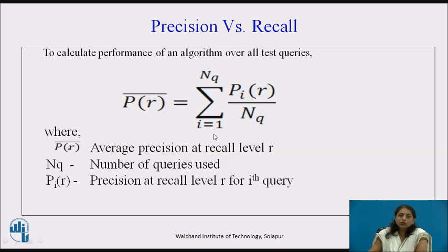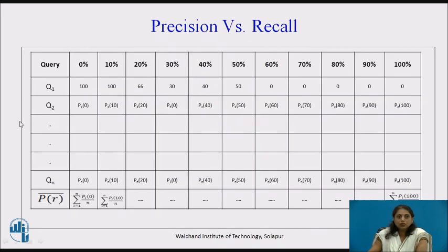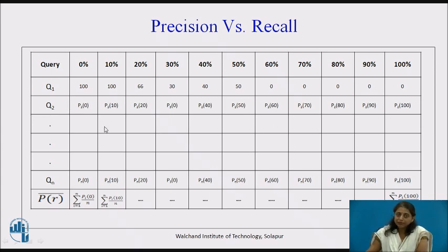Now, how do we calculate the performance of an algorithm over all test queries? We have seen it for a single query. The same algorithm can be run for nq queries. For each query we calculate precision and recall, then take the average to plot the graph. For the first query we note precision at each standard recall level, then run the second query and record its figures. After running all n queries, the average precision at each recall level is calculated and the precision-versus-recall graph is plotted.